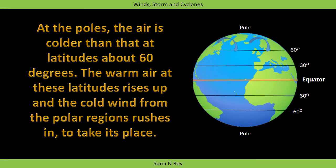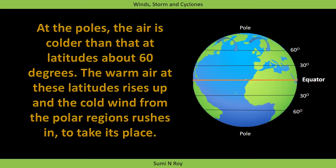Again, the air at latitudes of about 60 degrees on both sides of the equator is warmer than at the poles, which are very cold. So the warmer air at about 60 degree latitude rises up, creating a region of low air pressure, and cold air from the polar region, being at higher pressure, rushes in to take its place. This makes the wind blow from the poles of the earth towards the warmer region up to about 60 degree latitudes.